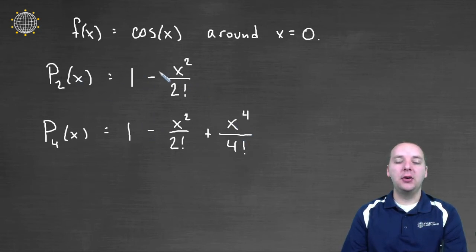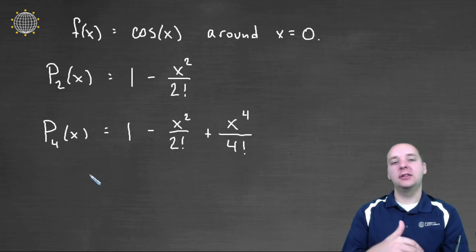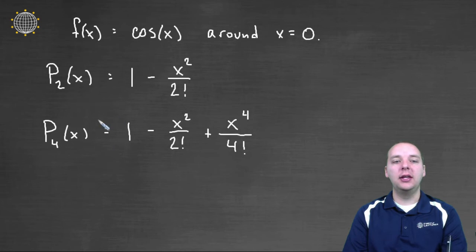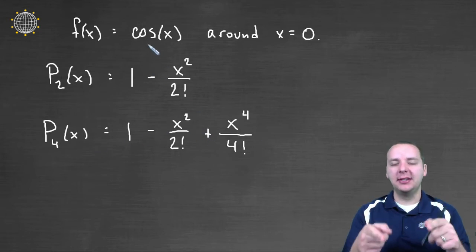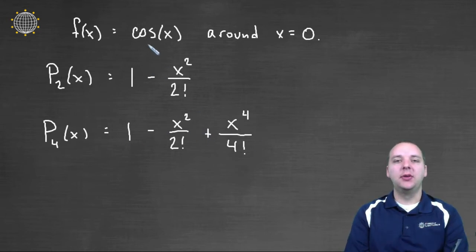This one should approximate cosine kind of well. And the degree four polynomial should approximate cosine very well. And you could keep going. You could do a degree six, seven, eight, nine, ten. I mean you could keep this guy going. Turns out cosine, you actually only have even powers for your Taylor polynomials because cosine is an even function. But that's a story for another video. But nevertheless, let me open up my calculator here.